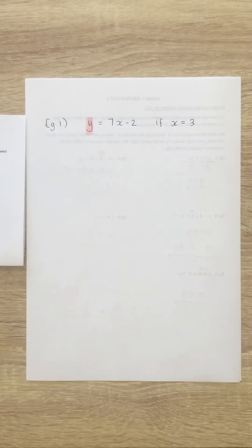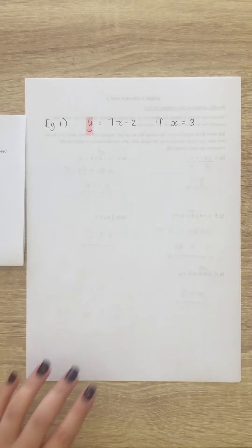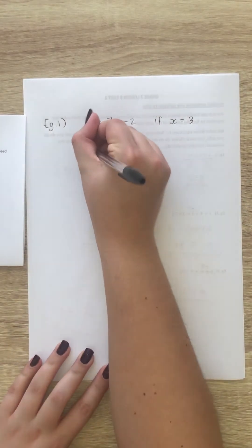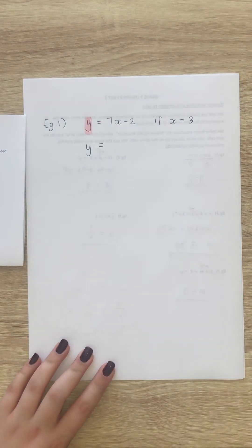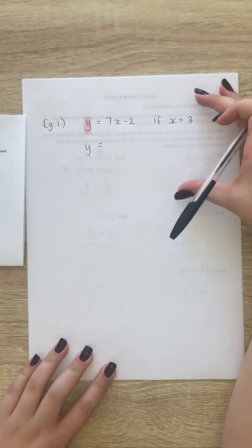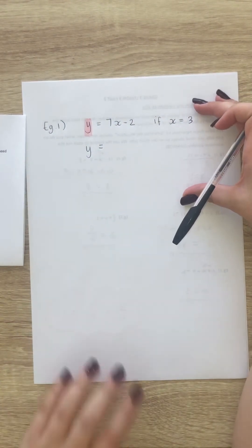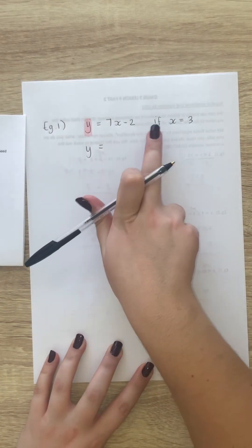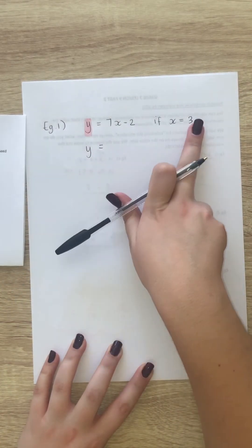Alright, so that's the sum given to you. They say y is equal to 7x minus 2, solve for y if x is equal to 3. So, they're telling you x is equal to 3. So, what we're going to do now, we're going to rewrite the equation. So, this is the steps you're going to show for every type of question like this. You rewrite the equation, and you say if, and then whatever is given. That's your first step.